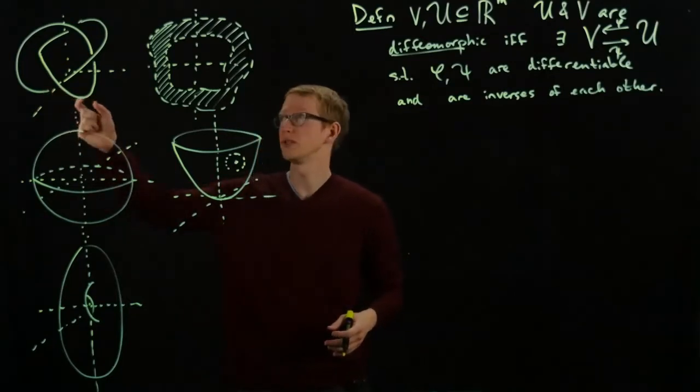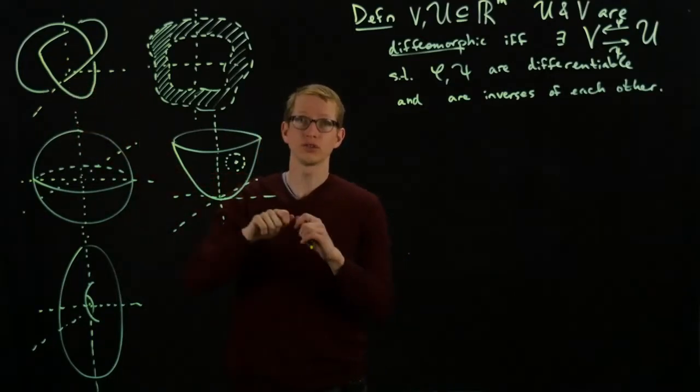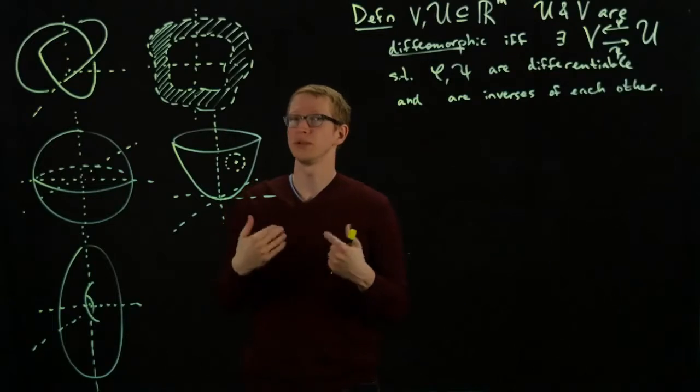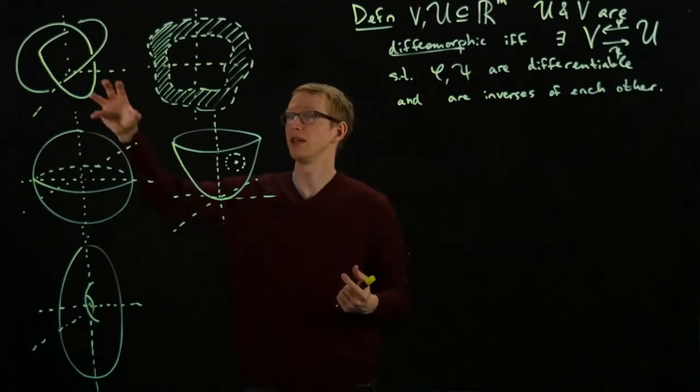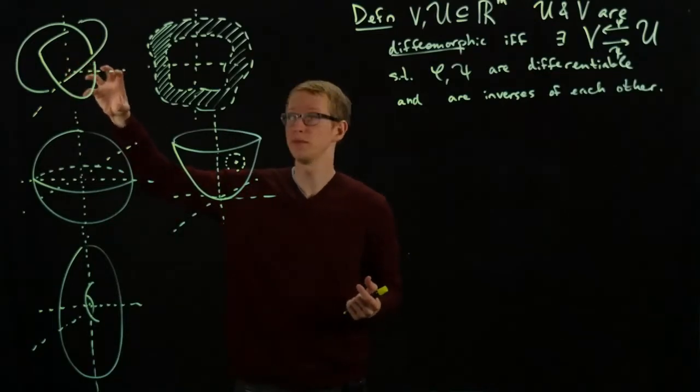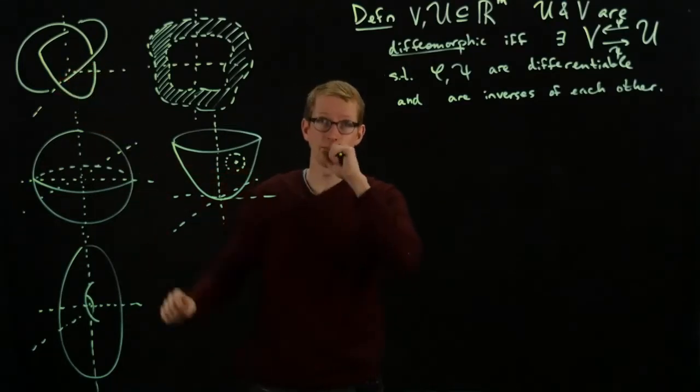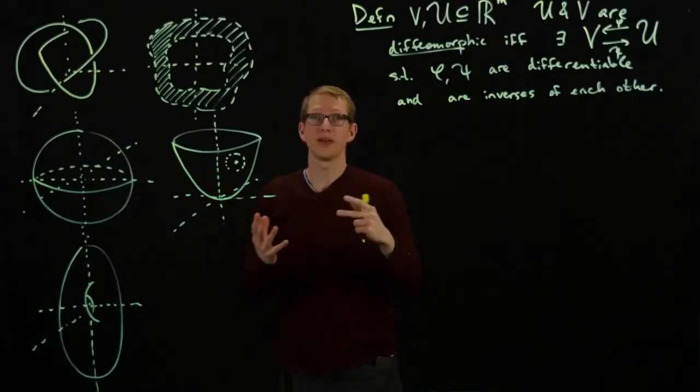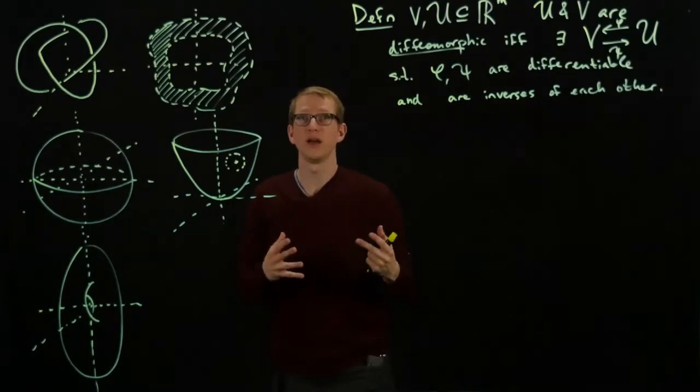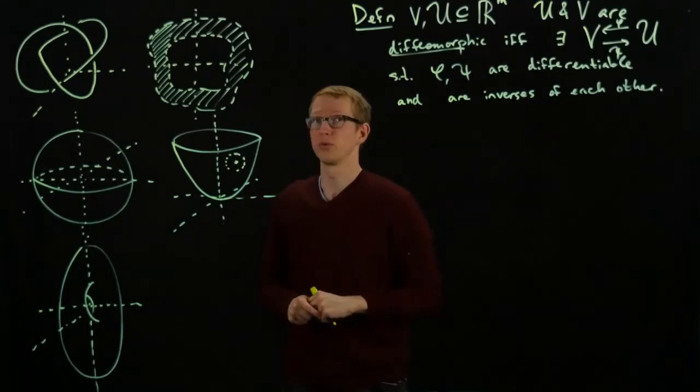In this first example, we see that around any point, it looks locally like a line. So we should be able to find some open set in R3 here, which is a ball, for instance, and intersect it with this curve. And we should be able to map that diffeomorphically to some open subset of the real line.